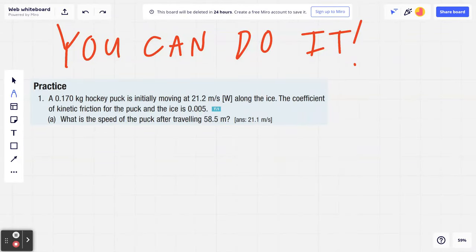Hi everyone. Let's take a look at the following physics example. Number one, a 0.170 kilogram hockey puck is initially moving at 21.2 meters per second west along the ice. The coefficient of kinetic friction for the puck and the ice is 0.005. Part A, what is the speed of the puck after traveling 58.5 meters?